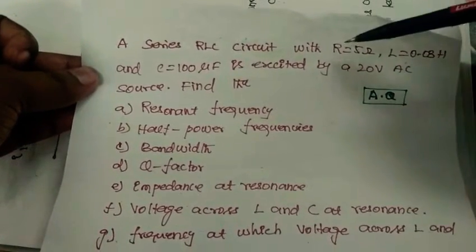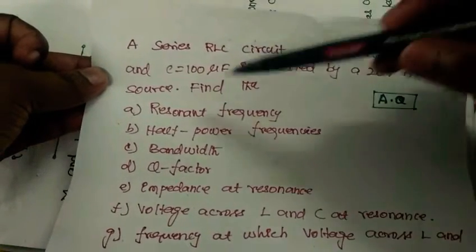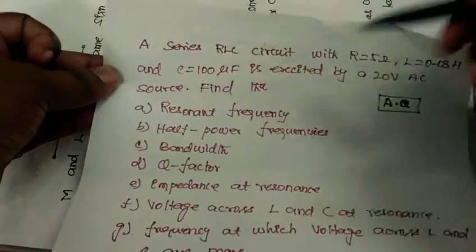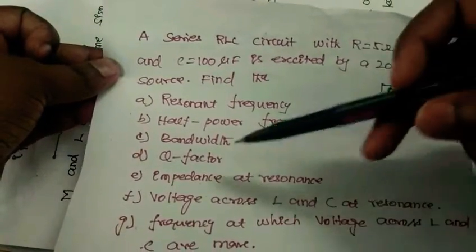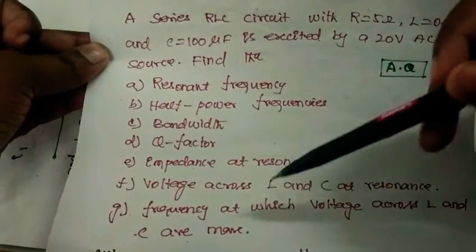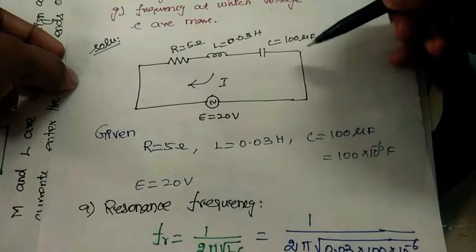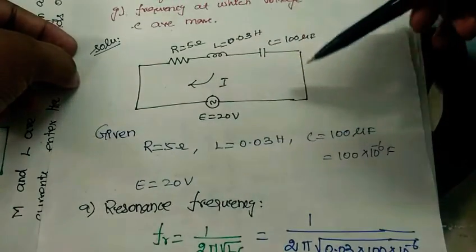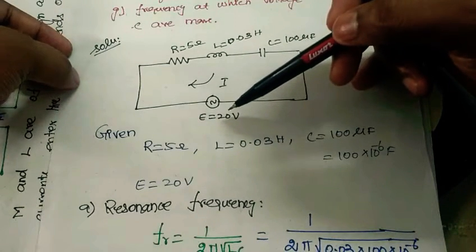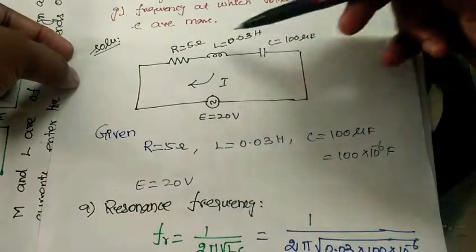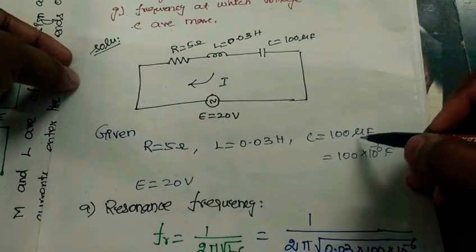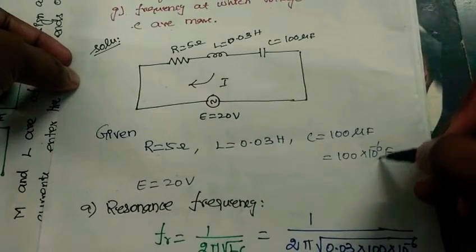The problem: In a series RLC circuit with R equals 5 ohm, L equals 0.03 Henry, and capacitor value 100 microfarad is excited by a 20 volt AC source. Find the resonant frequency, half-power frequencies, bandwidth, Q-factor, impedance at resonance, voltage across L and C at resonance, and frequency at which voltage across L and C are maximum. The resistance, inductance, and capacitance values are given. The capacitor is given in microfarad, so we convert to farad by using 10 power minus 6.